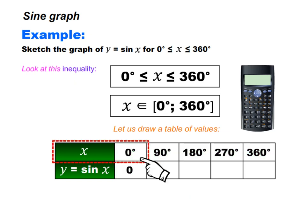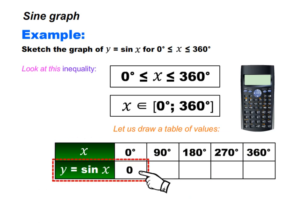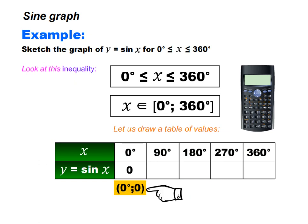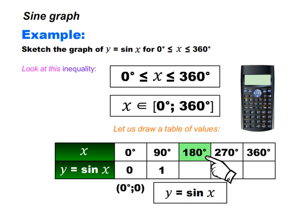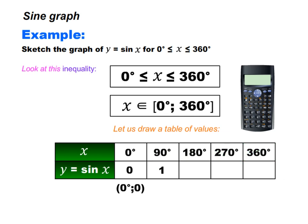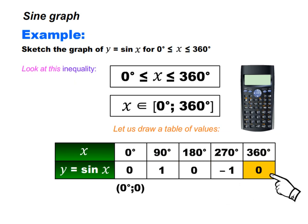X is equal to 0, y is equal to 0. So 0 degrees and 0 is a point that lies on our graph. Let us put 90 degrees in the place of x — we will have 1. Let us put 180 degrees, 270 degrees, and 360 degrees in the place of x. We will have 0, minus 1, and 0 respectively. Our completed table looks like this.